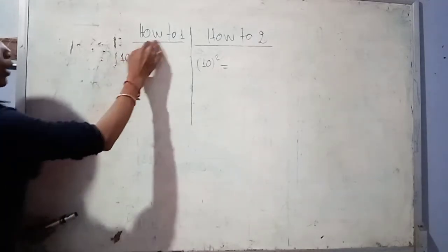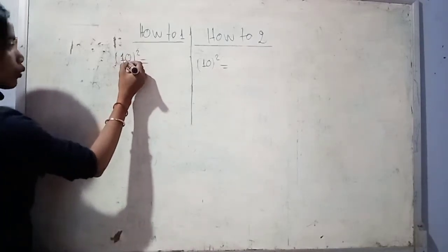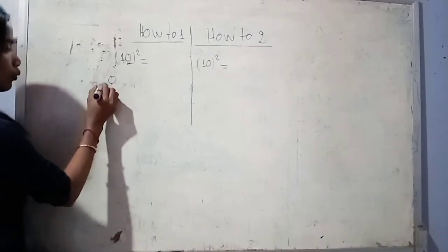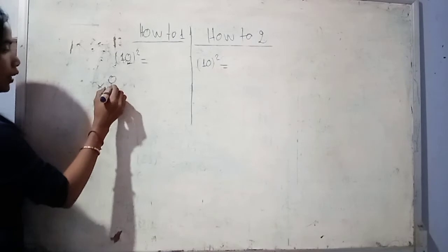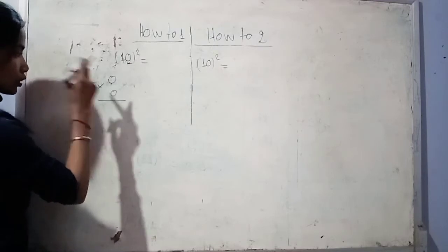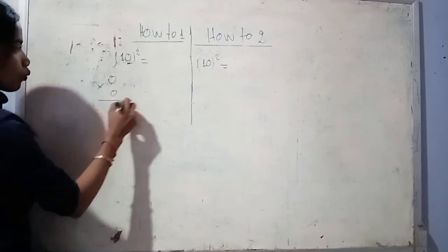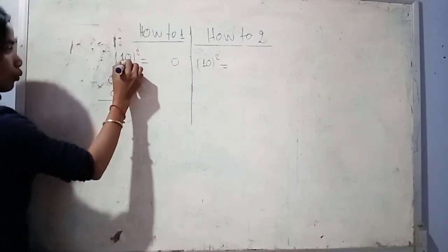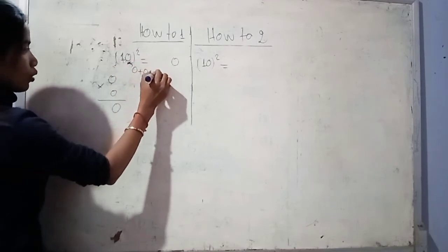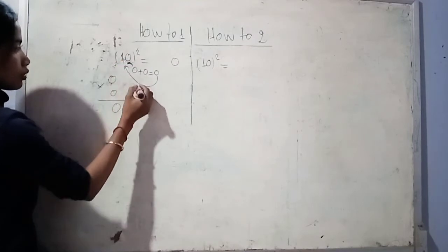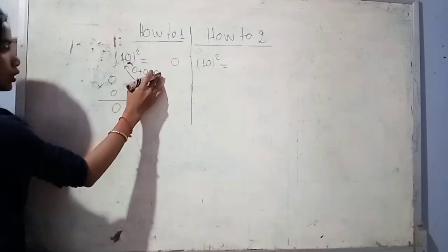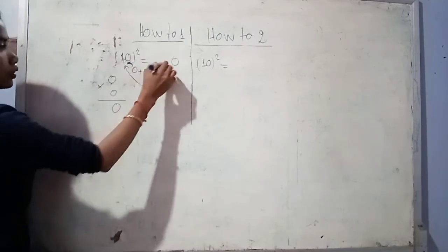How to... zero multiply by zero is zero, zero multiply by zero is zero. Zero plus zero is zero. Zero multiply by one is zero.